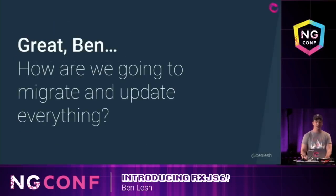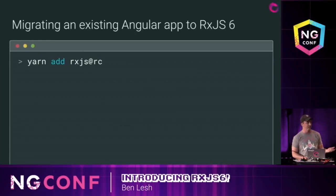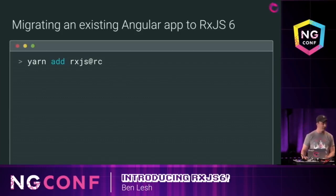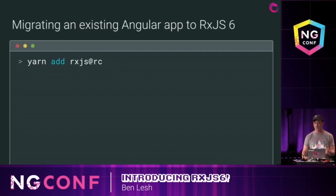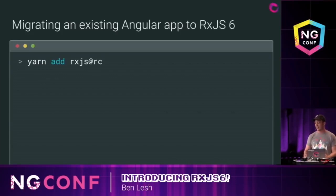So those are all the changes. How are we going to migrate and update everything? To upgrade RxJS, if you're using yarn or npm, you can just install RxJS at RC, and right there you've already got RxJS 6.